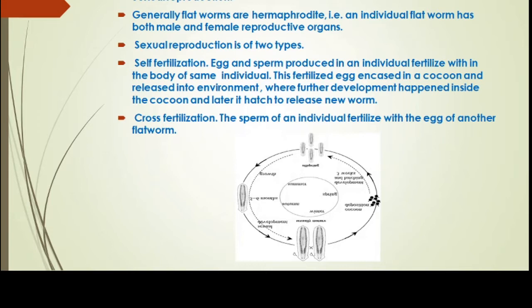In sexual reproduction, the organisms are hermaphrodite. Based on fertilization, there are two types: self-fertilization and cross-fertilization. In self-fertilization, the eggs and sperm are provided by the same individual. After fertilization, the egg has a protective covering called a cocoon, which provides nourishment necessary for the developing process.